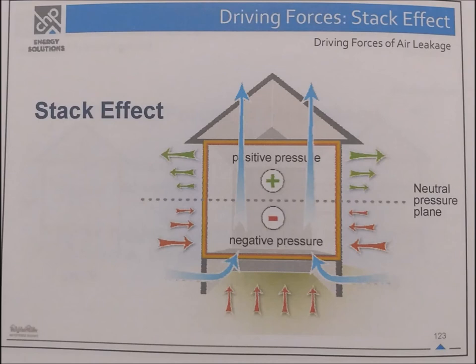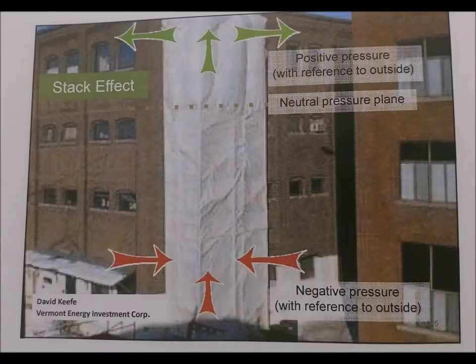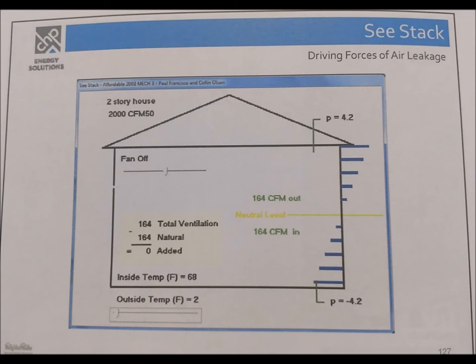Stack effect: Negative pressure is applied at the bottom, passes through a neutral plane, and positive pressure exits at the top — positive pressure with reference to the outside, negative with reference to the inside. Example for a two-story house: 2,000 CFM at 50, fan off, total ventilation at 164 (neutral). Inside temperature 68°F, outside 2°F. Negative pressure at the bottom is negative 4.2 pascals, so the top of the house is pressurized at positive 4.2 pascals.